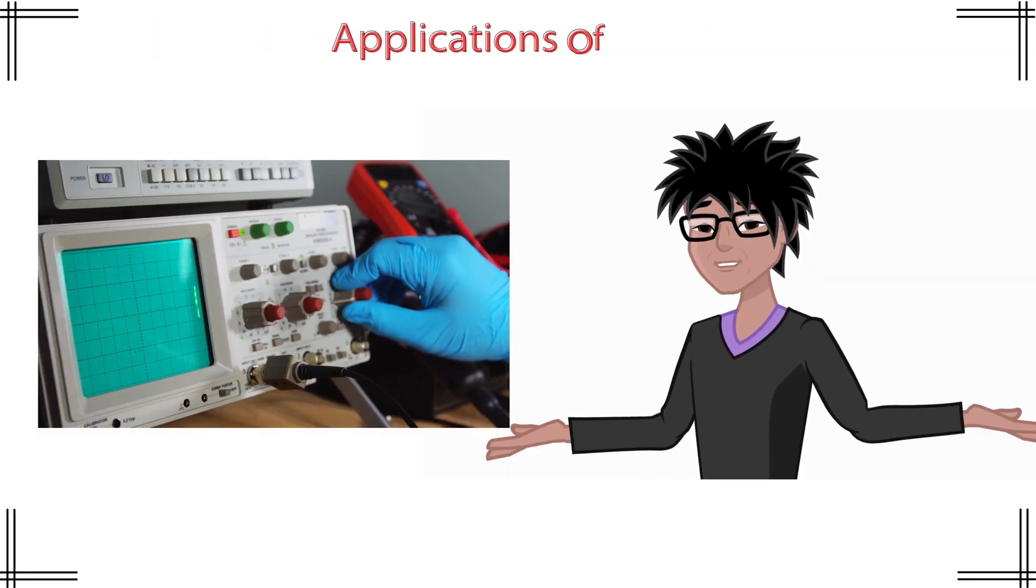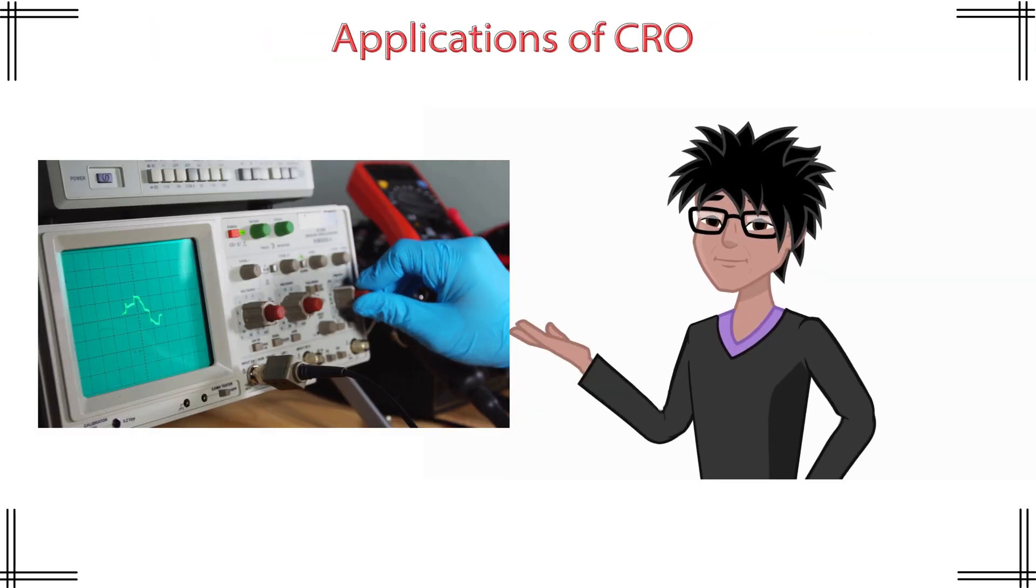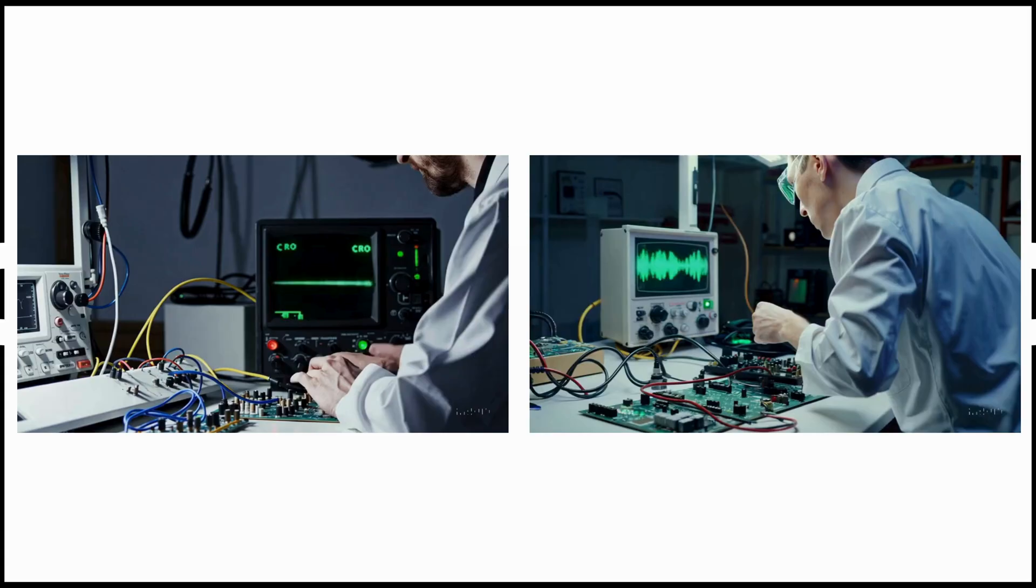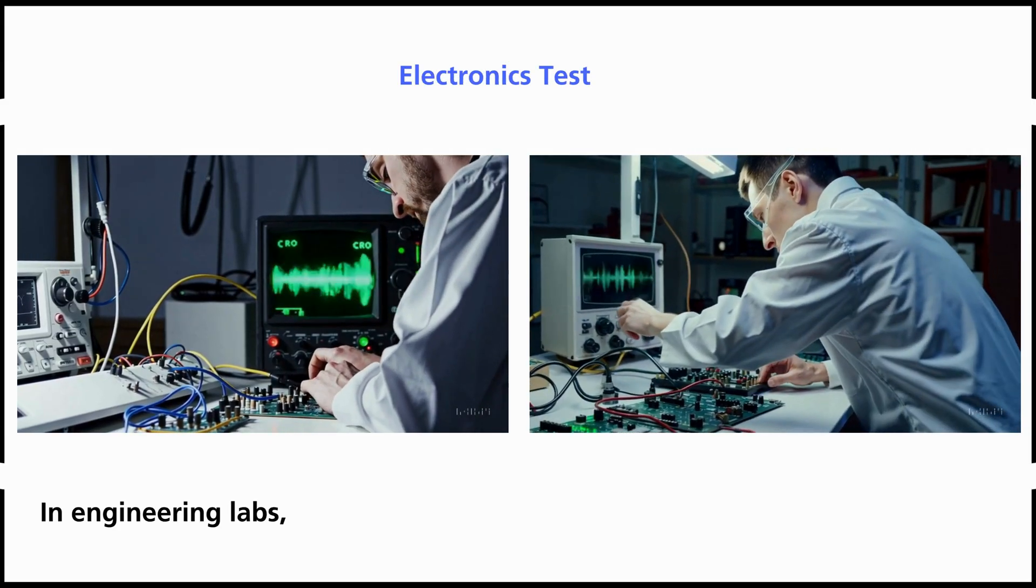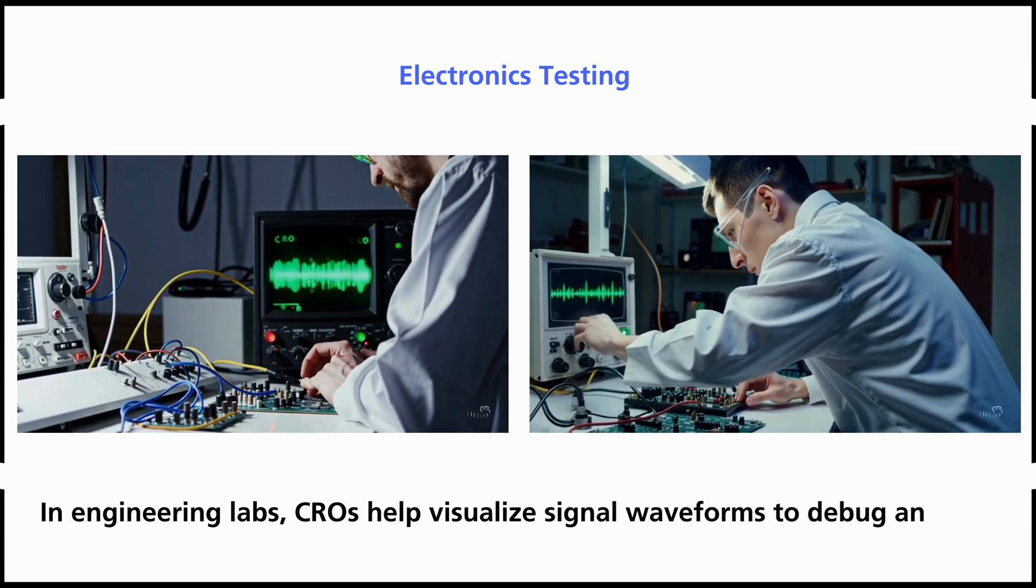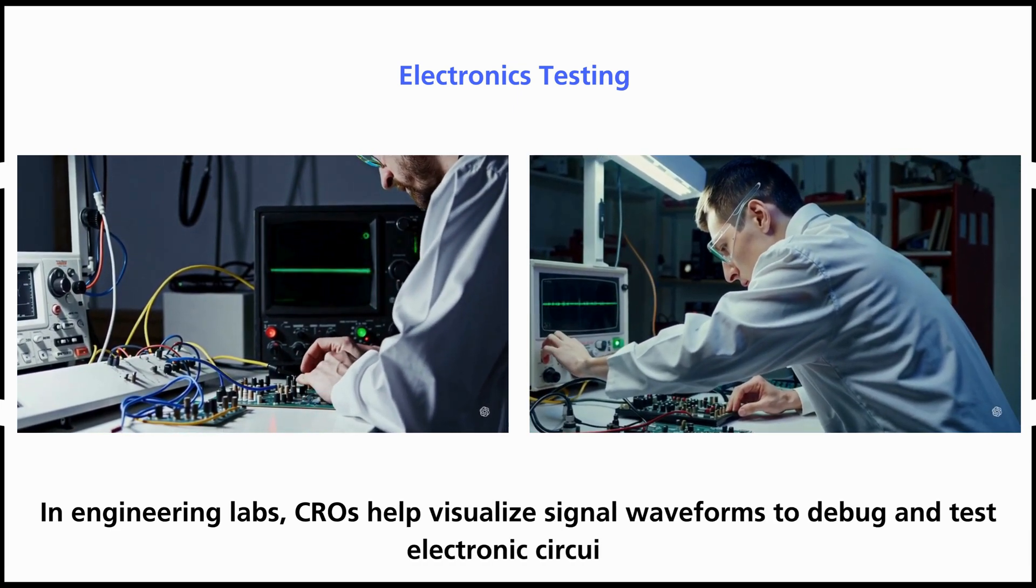The cathode ray oscilloscope isn't just for the lab. It has real world applications across many fields. Electronics testing. In engineering labs, CROs help visualize signal waveforms to debug and test electronic circuits.